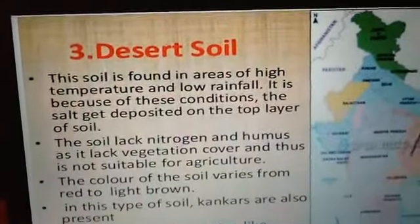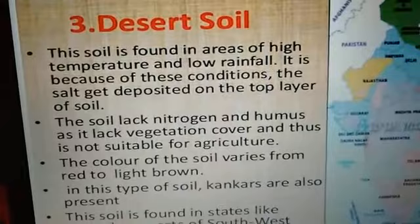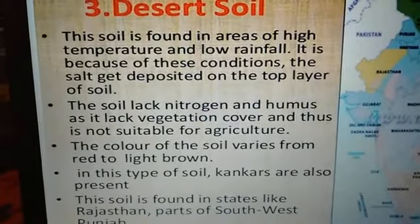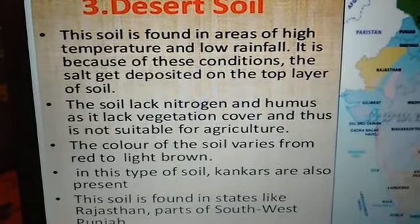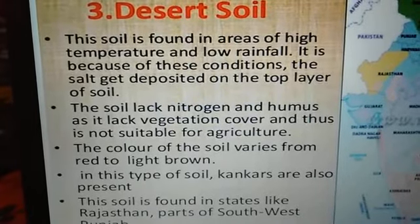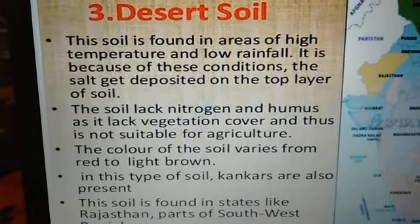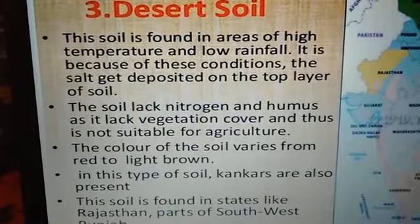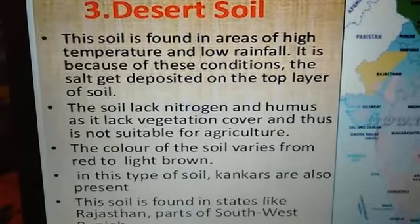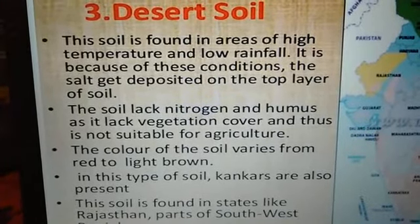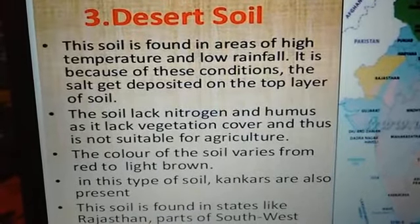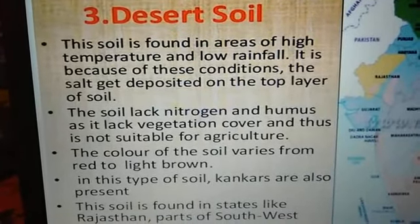The third type is desert soil. This soil is found in areas of high temperature and low rainfall. In these conditions, soil is deposited in the top layer, and the soils developed in this area are called desert soil.